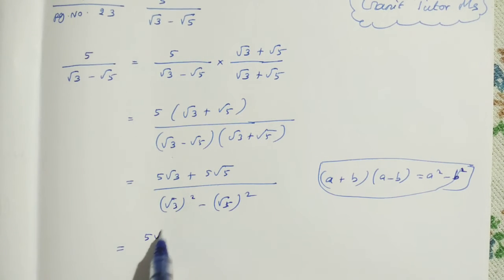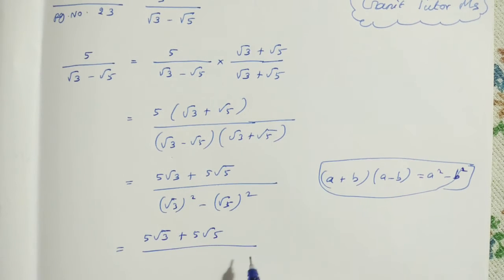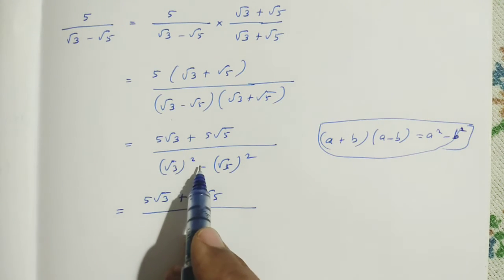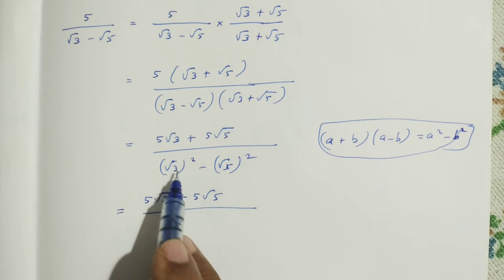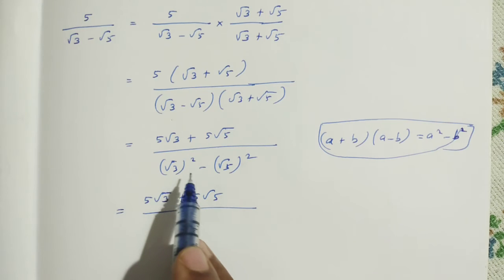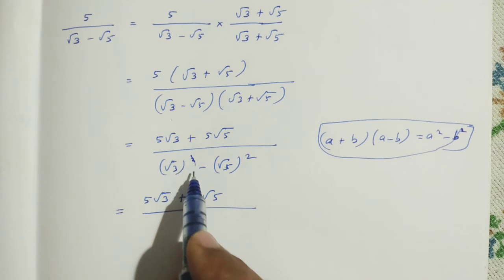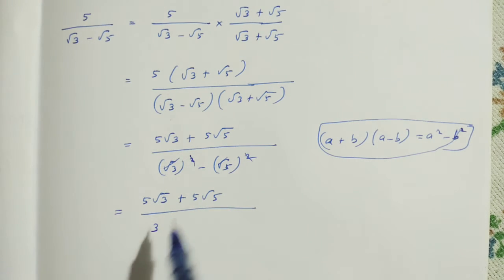Then, 5 root 3 plus 5 root 5 divided by, here we can cancel directly. Root and root square cancel. Root 3 times root 3 equals root of 3 times 3, which equals 3. So root squared and root cancel. The remaining value is 3. Here also, we get minus 5.